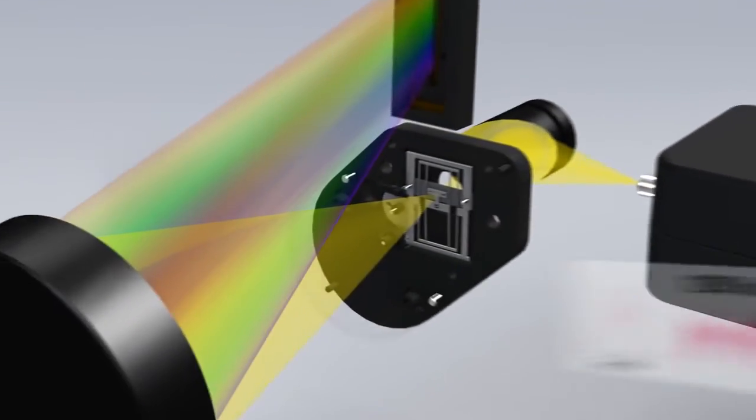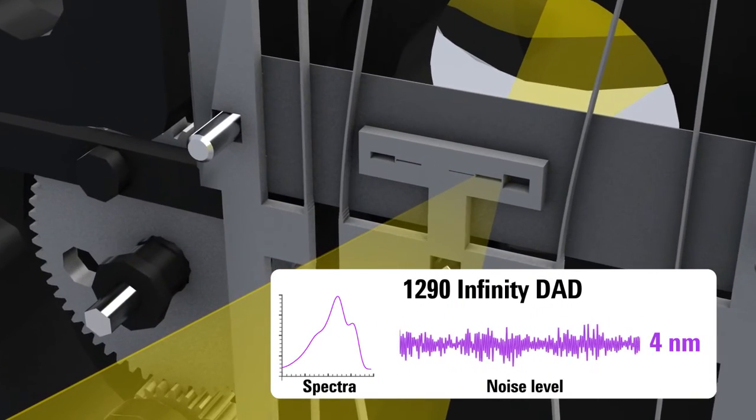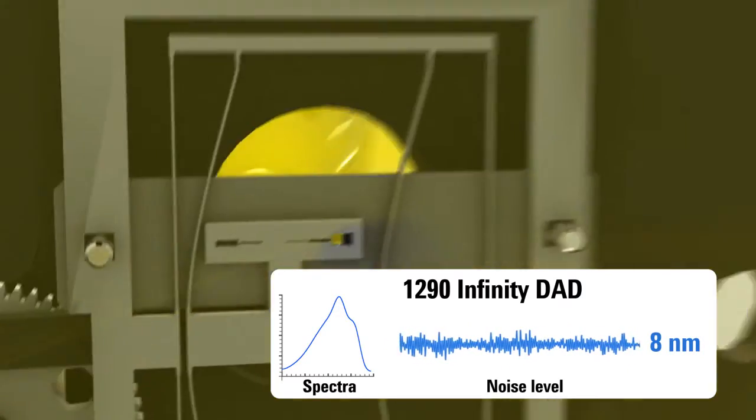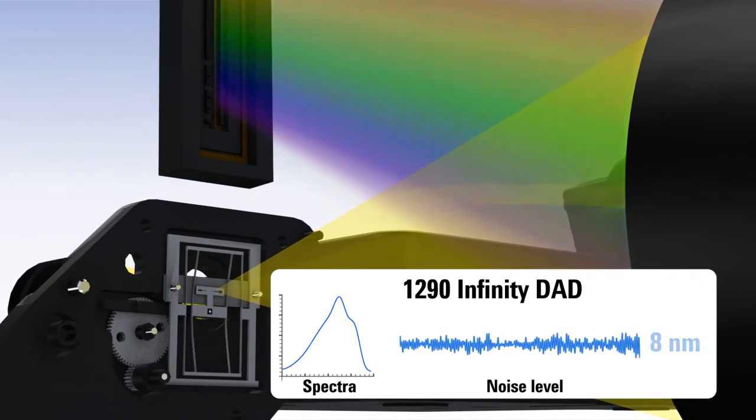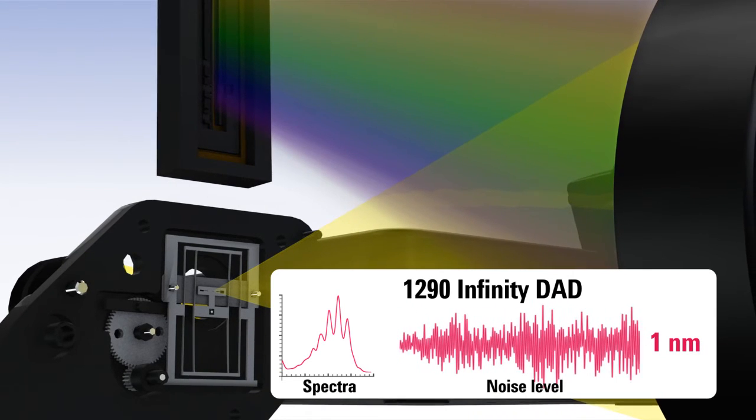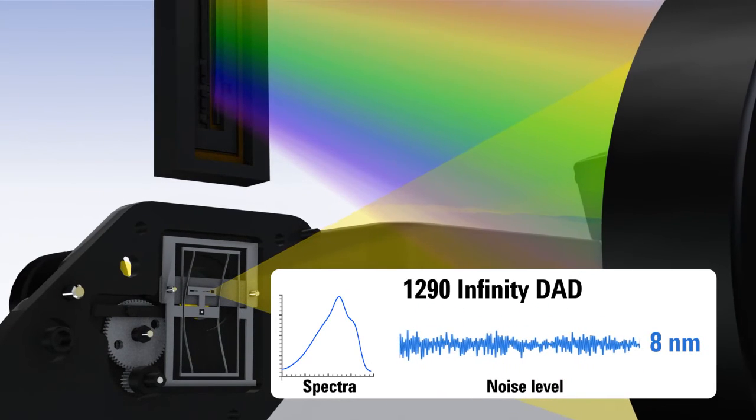The unique programmable slit in the 1290 Infinity DAD allows you to rapidly optimize sensitivity and spectral resolution. If you require maximum spectral resolution, simply narrow the slit to 1 nm. For highest sensitivity and lower detector noise, set the slit to 8 nm.